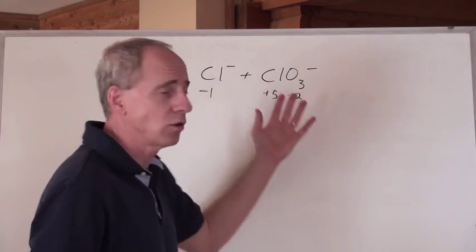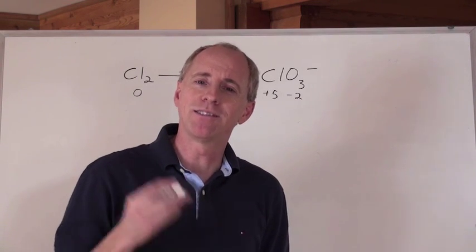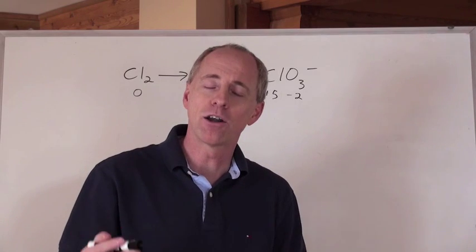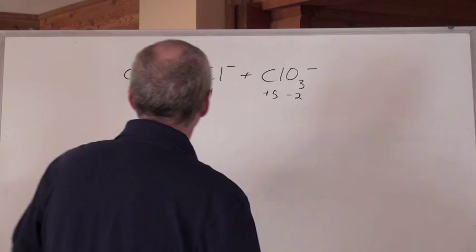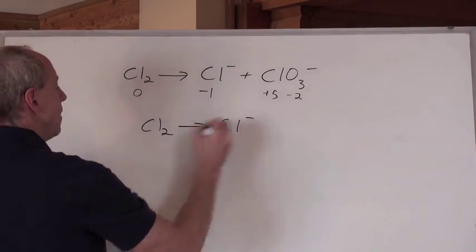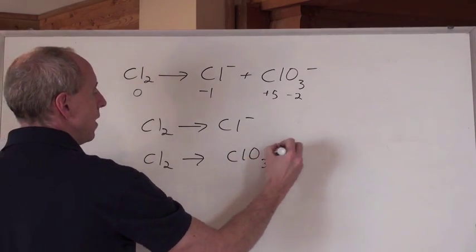That's pretty obvious that you need to do that here, right? Just remember that the same element undergoing both oxidation and reduction is called auto-oxidation or disproportionation. Alright. So, the Cl2 is going to make the Cl negative, and the Cl2 is also going to make ClO3 negative.